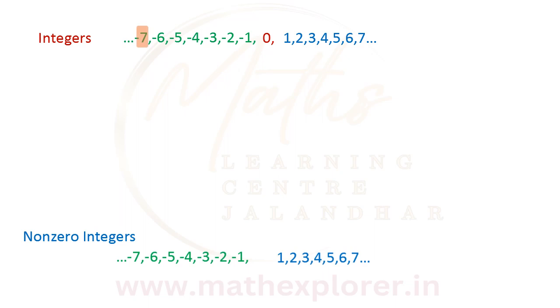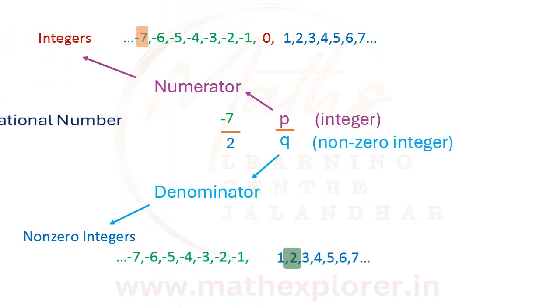Now choose a number from the collection of integers and a number from the collection of non-zero integers and write it in the form -7/2. This new number, which is of the form p/q, where numerator p is an integer and the denominator q is a non-zero integer, is called a rational number.